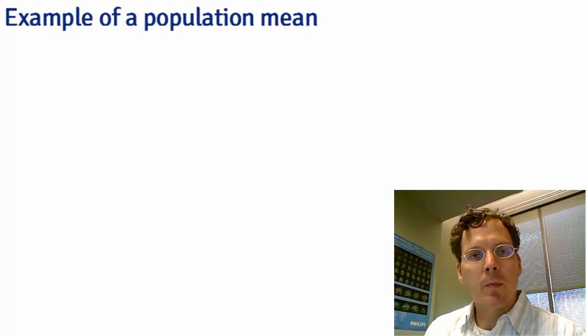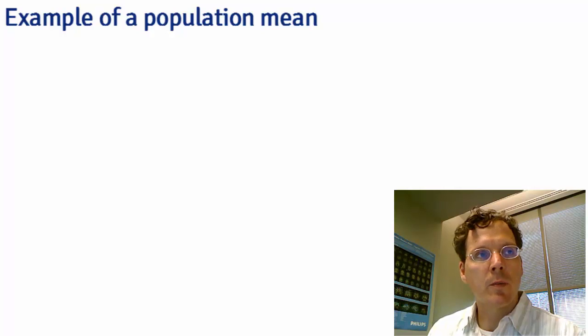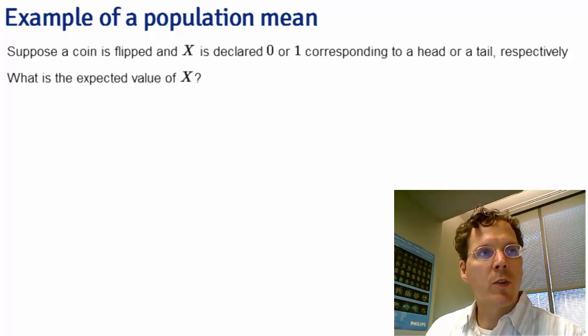Now let's talk about an example of obtaining a population expected value. Suppose a coin is flipped and x is declared 0 or 1 corresponding to a head or a tail. What is the expected value of x?